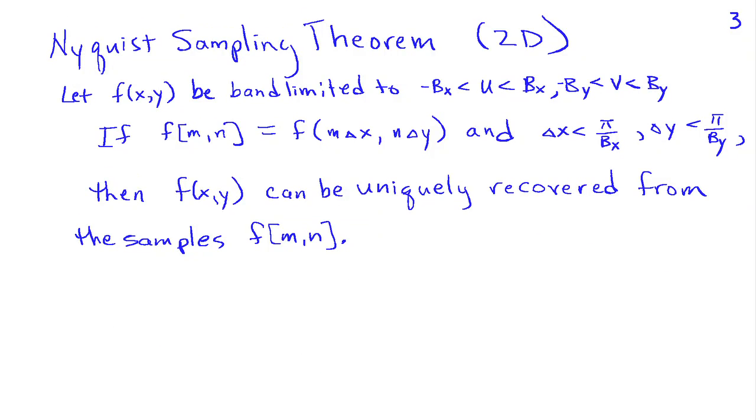This leads us to a two-dimensional version of the Nyquist sampling theorem, which says that if f of x, y, our original image, is band limited to this band minus b sub x to b sub x for u and minus b sub y to b sub y for v, then we can reconstruct our original image f of x, y uniquely from the samples f of m, n, which are taken at intervals delta x and delta y, provided that delta x is less than pi over b sub x and delta y is less than pi over b sub y.